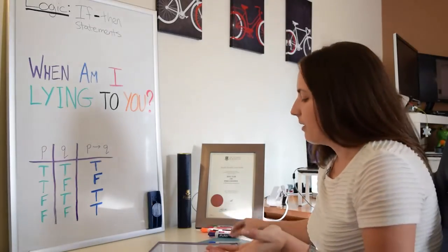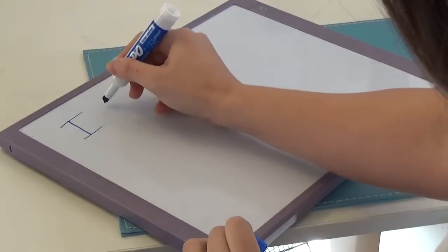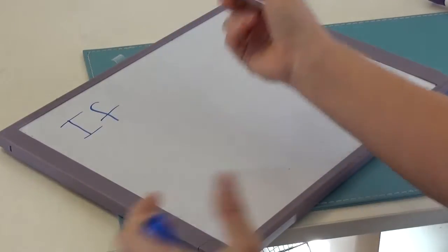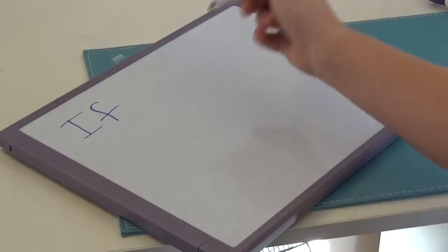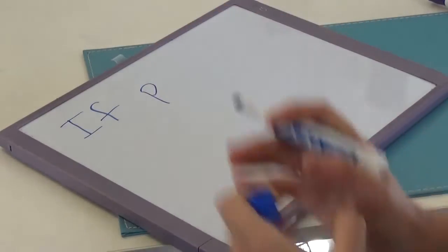So an if-then statement is anything of this form. If something, and you could represent the something by anything you want. Washing my car, or you could just write something like P, which we can use as a placeholder for the something.